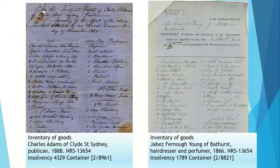Here we have two examples from insolvencies. The first is an inventory of goods of Charles Adams of Clyde Street, Sydney, who is a publican — therefore he has a counter, tables, bottles of soda water, bottles of wine, and various other items. On the other side, we have the inventory of goods of Jabez Young of Bathurst, who is a hairdresser and perfumer in 1866 — he has shampoo, show tickets, bottles of scent, volunteer cups, and so on.